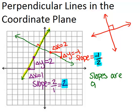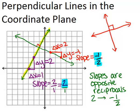That means two things are going on. They're opposites. That means one will be positive and one will be negative. They're also reciprocals, meaning that the fraction has been flipped. So 1 over 2 becomes 2 over 1 in our other slope. So the slopes of 2 and negative 1 half are opposite reciprocals.